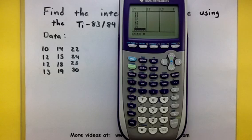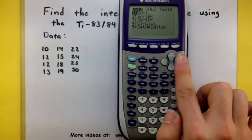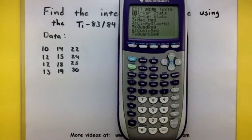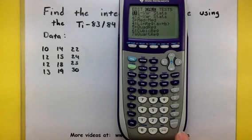Once you have all of that data entered in, press your STAT button again. But this time, arrow over until you have CALC selected. You want to go into the first option that says 1 variable stats. So it should be selected. Go ahead and press Enter.